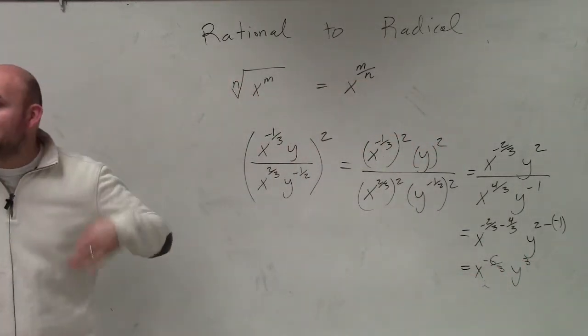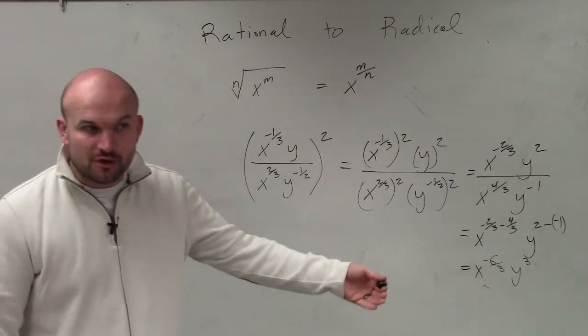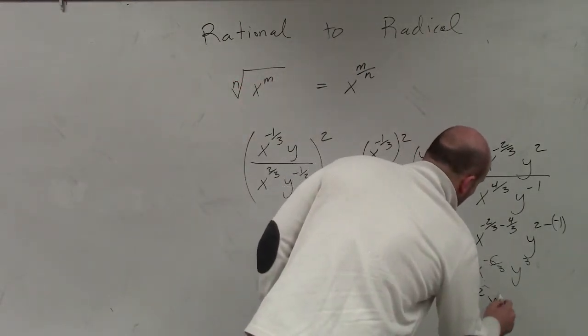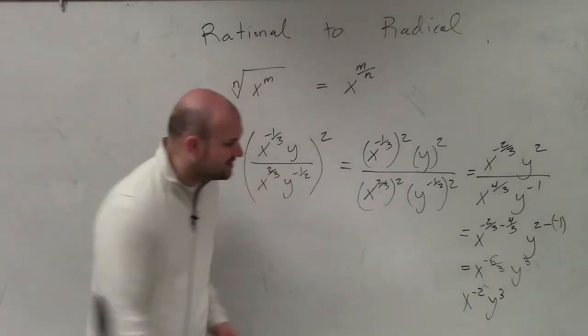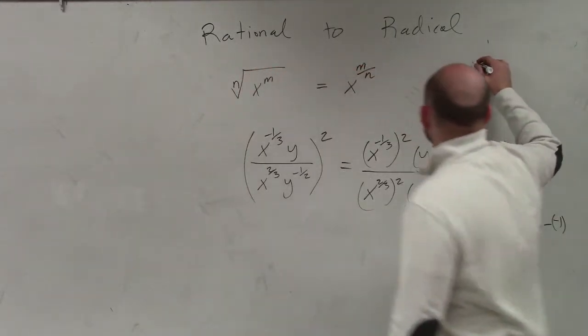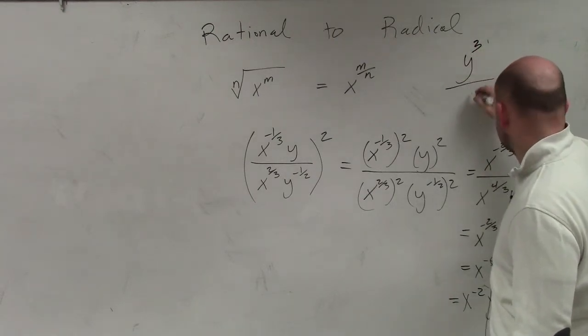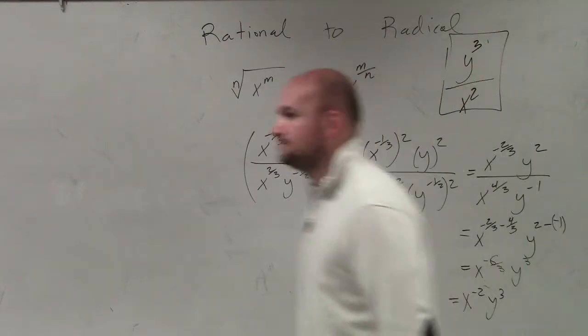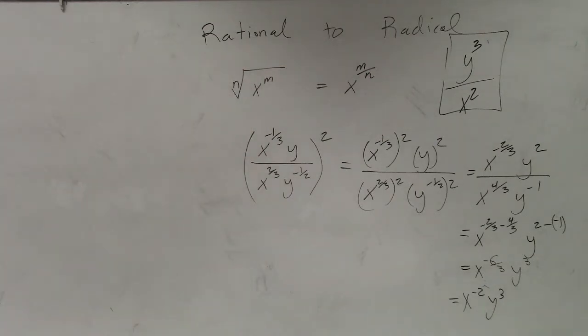Well, negative 6 divided by 3 is going to be negative 2. So that's x to the negative 2nd, y cubed. Now, remember, to rewrite x to the negative 2nd with a positive power, we'd have to put it in the denominator. So your final answer is y cubed over x squared.